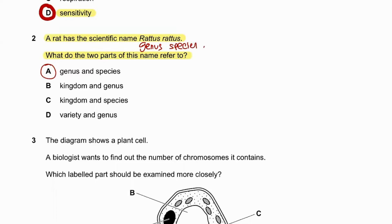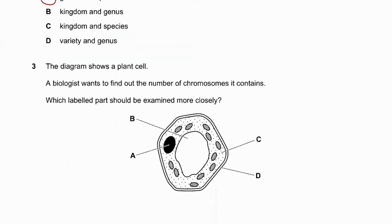The diagram shows a plant cell. A biologist wants to find out the number of chromosomes it contains — which labelled part should be examined more closely? Chromosomes are contained within the nucleus, so label A which indicates the nucleus should be zoomed in more closely.